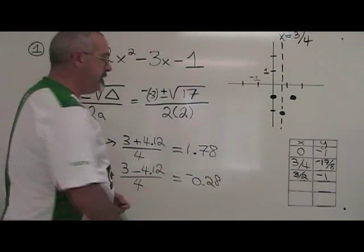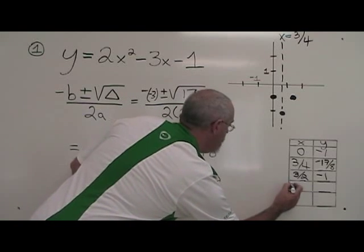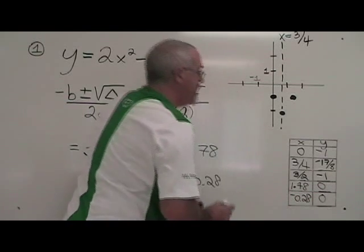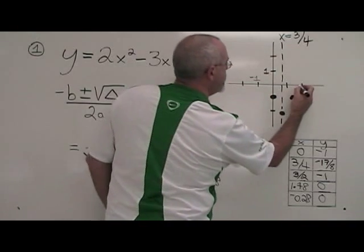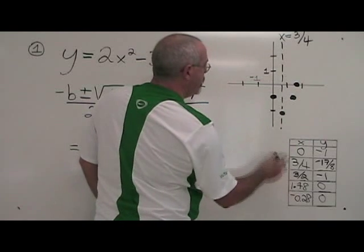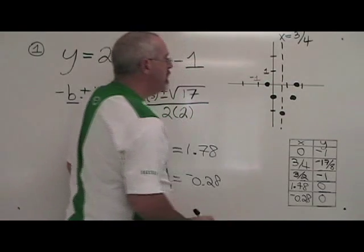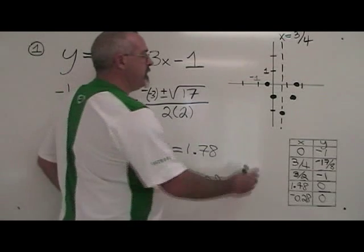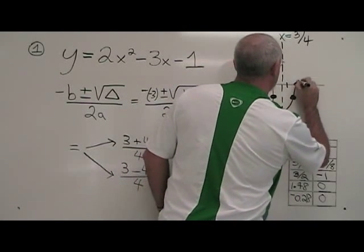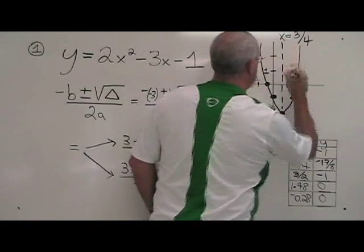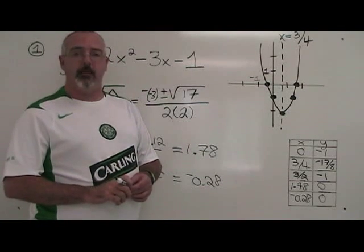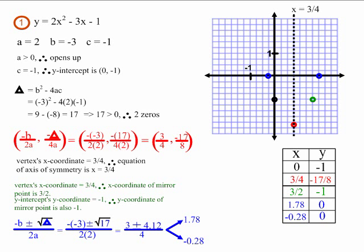These are our x-intercepts, and we will put them in the table right here. 1.78, 0, negative 0.28, 0. And let's graph these. 1.78, 0 is about here. And negative 0.28, 0 is about here. We have shown the zeros of our parabola. All that's left is for us to draw our parabola. Make sure that you draw this neatly with an actual curve and not a straight line, because the drawing will be worth marks on your exam. This is what example 1 looks like after we have found our two zeros.